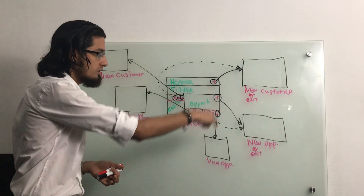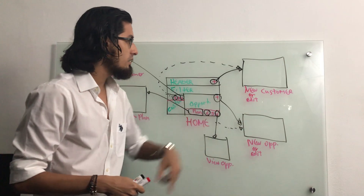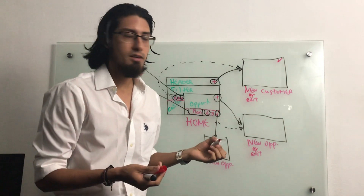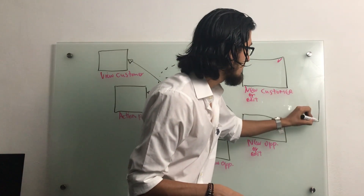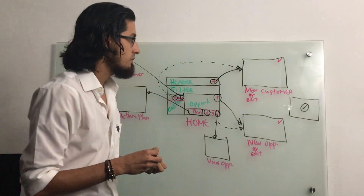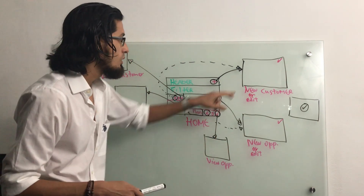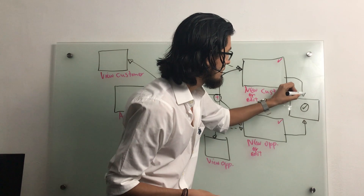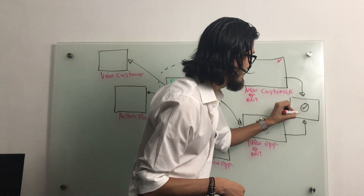Now we need to go to the other screens and identify if there are additional actions. From the new customer or new opportunity screens, when we submit the data, there is going to be a success screen. It's basically an informational screen that will tell me that the customer or opportunity has been successfully created or edited. Both will launch the same success screen.